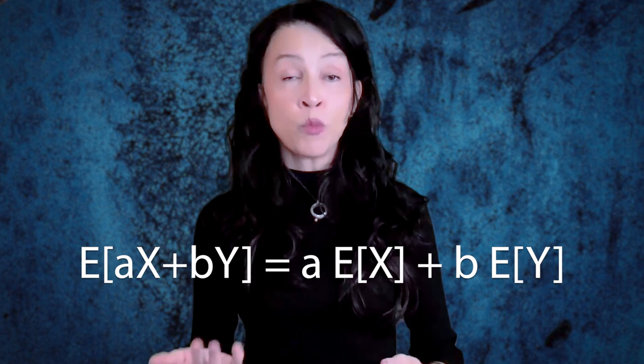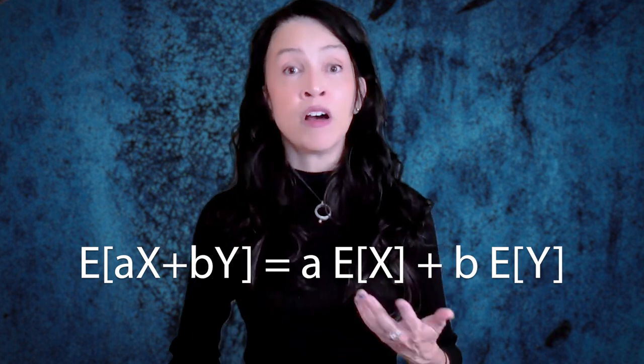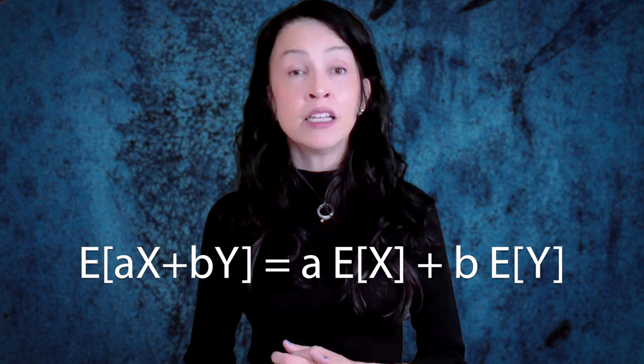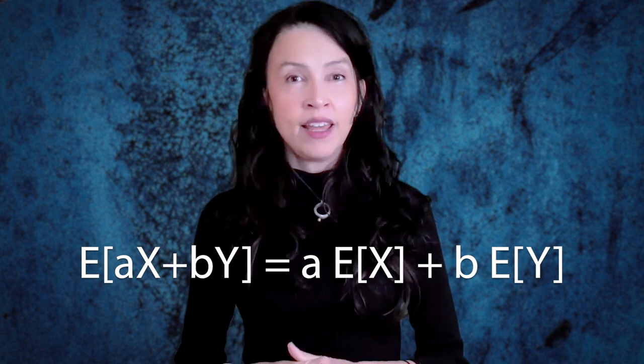Expectation is a linear operator. For example, if you take the expected value of aX plus bY, where X and Y are random variables and a and b are constants, you'll get a times the expected value of X plus b times the expected value of Y. This is not that hard to show - it uses a linearity property of the sum, but also some notions about transforming from one distribution to another, because if you're taking the expectation of a function of two random variables, you do need to think about a joint probability mass function for those random variables, technically.